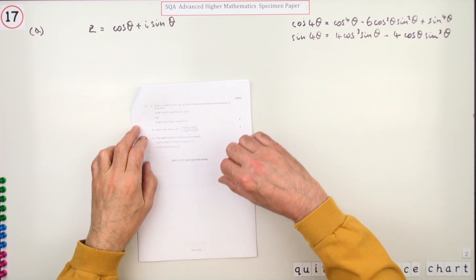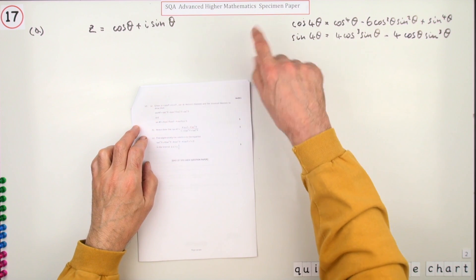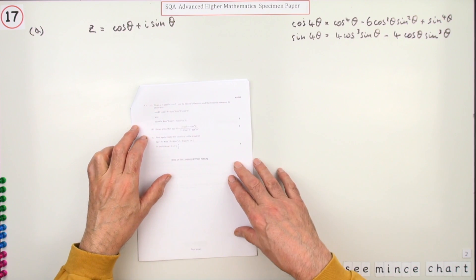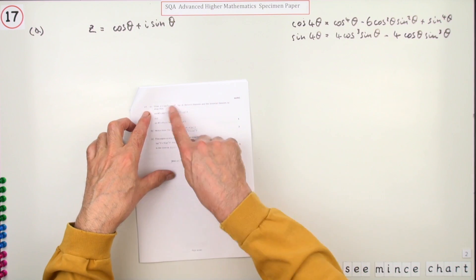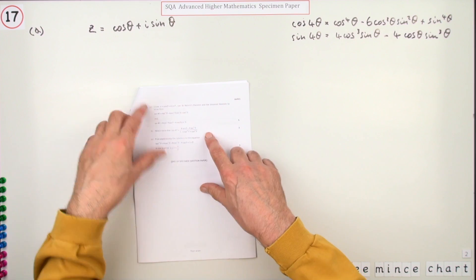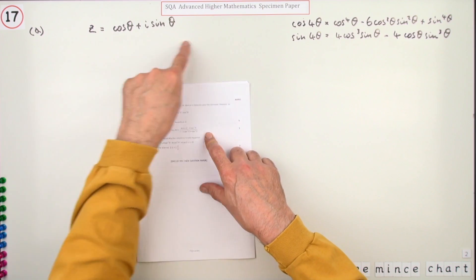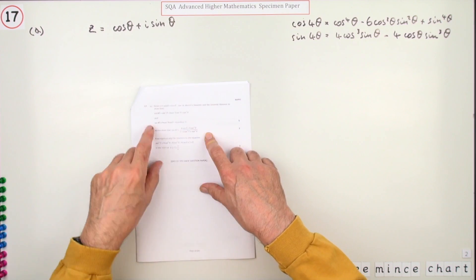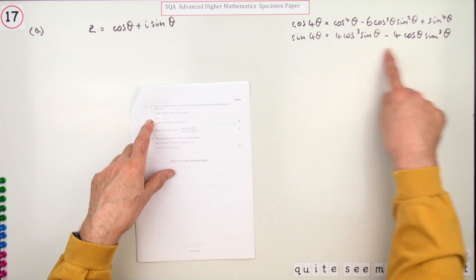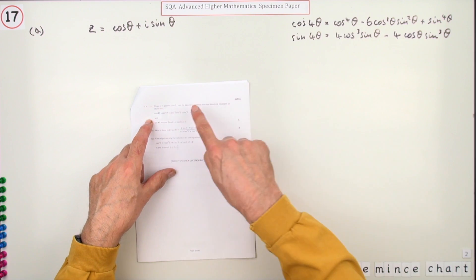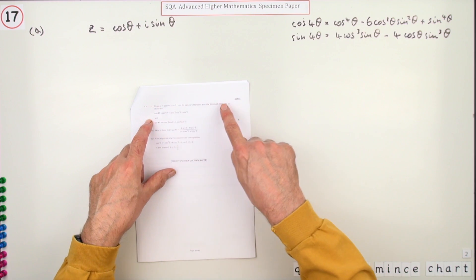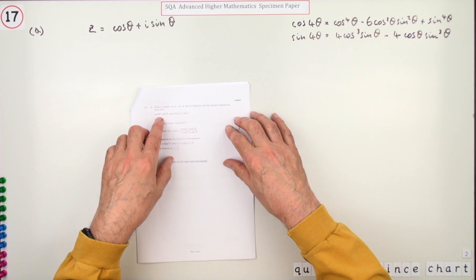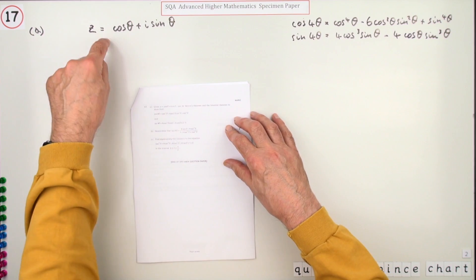Number 17, the last one in the specimen paper, for 11 marks — essentially a trigonometrical question. The first part for five marks is to take this complex number in its polar form and demonstrate two identities by using De Moivre's theorem and the binomial expansion. It's that standard approach: expand it two ways and equate the parts.